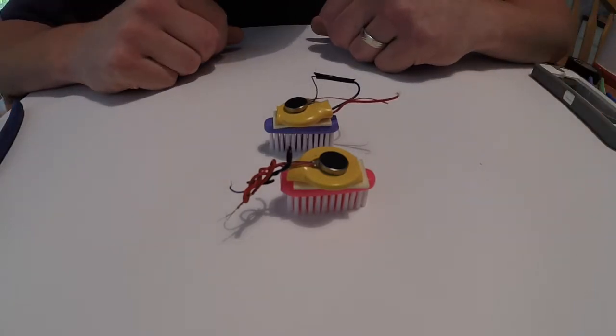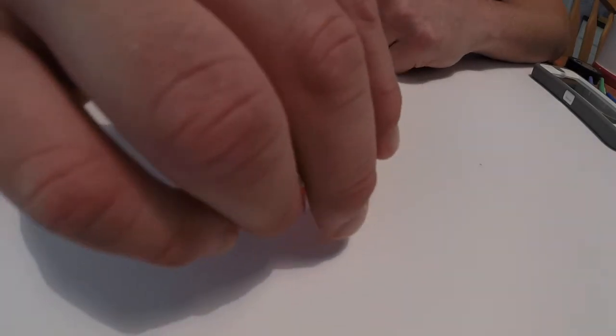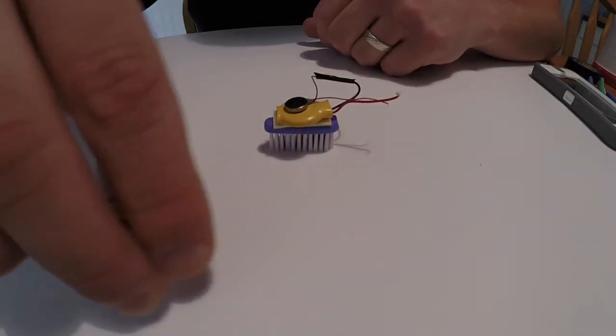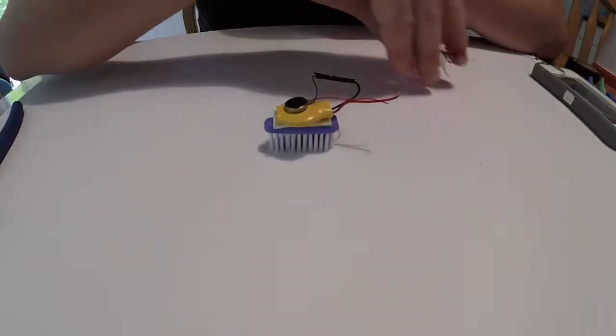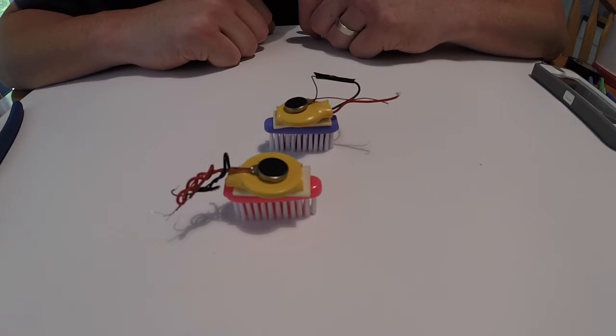So challenge one: how straight can you make it go? Challenge two: can you make it spin? Challenge three: can you make it go in a circle? That is the first brush bot challenge. Once you have that figured out and pictures uploaded, move on to the next challenge, which is thinking about the art bot.